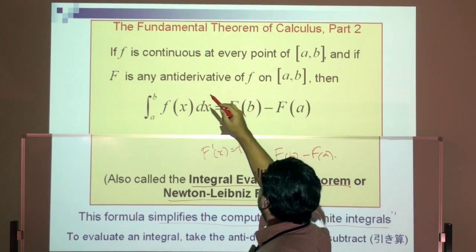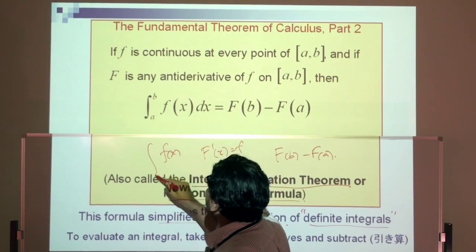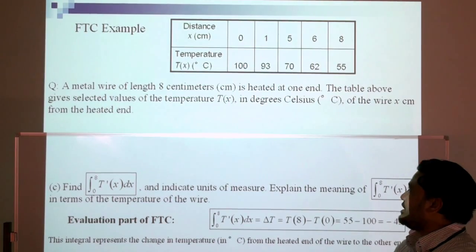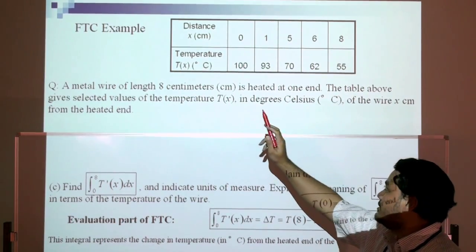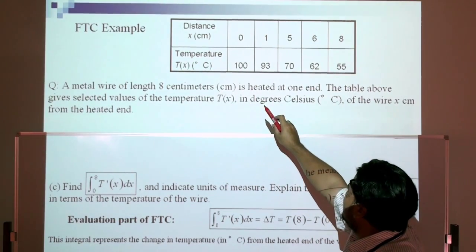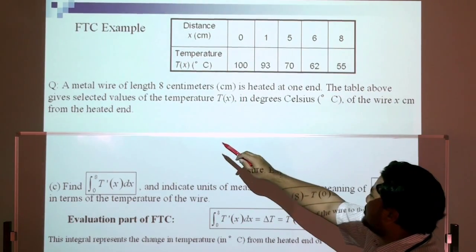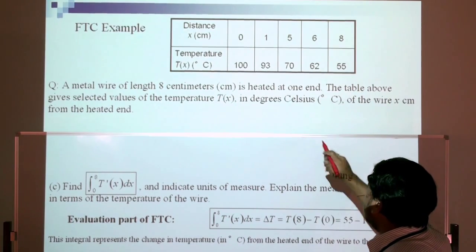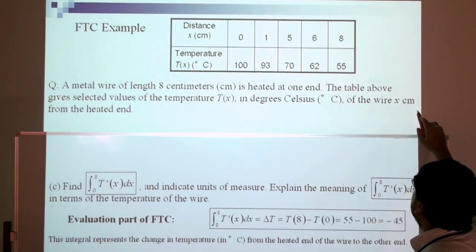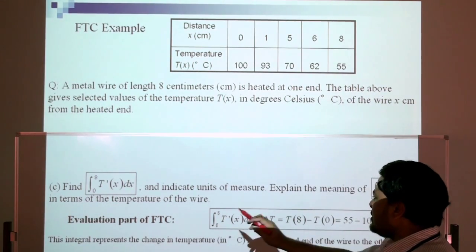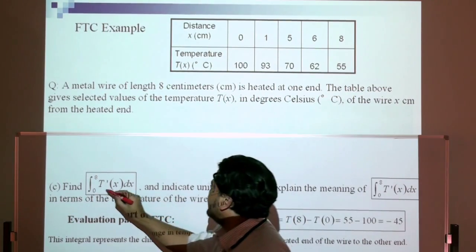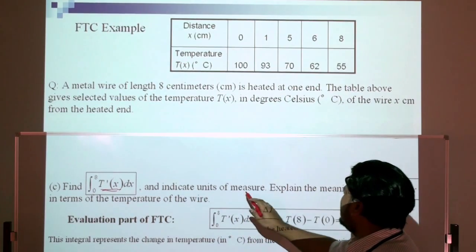Now for an example application of the FTC. We have a metal wire of length 8 centimeters heated at one end. The table gives selected values of the temperature T(x) in degrees Celsius of the wire, where x is the distance in centimeters from the heated end. We need to find the integral of T(x) with respect to x and explain what it means in terms of the wire's temperature.